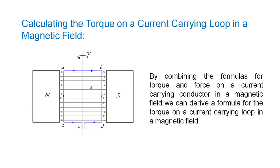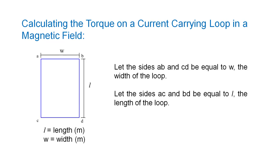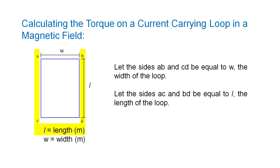The ends of the loop, marked AB and CD, make no contribution to the torque, so we need only concern ourselves with the torque generated by the forces on the sides of the loop, which are marked AC and BD. The sides AB and CD are equal to W, the width of the loop, and the sides AC and BD are equal to L, the length of the loop.